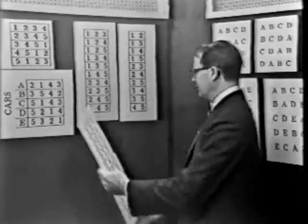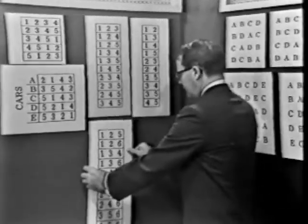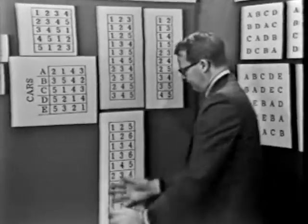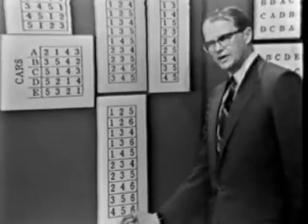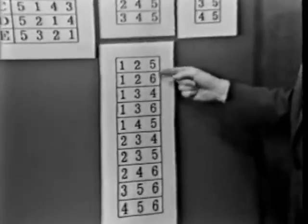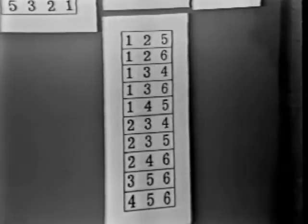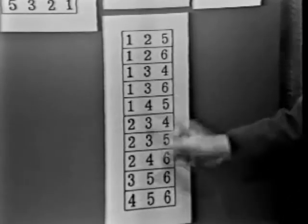But it turns out there are other balanced incomplete block designs which are not combinatoric, and we see one of them right here. Here's a balanced incomplete block design in which every treatment appears with every other treatment twice. It's six treatments in block sizes of three, but you will notice there are only ten blocks. So this is not a combinatoric balanced incomplete block design. It is nevertheless a balanced incomplete block design.